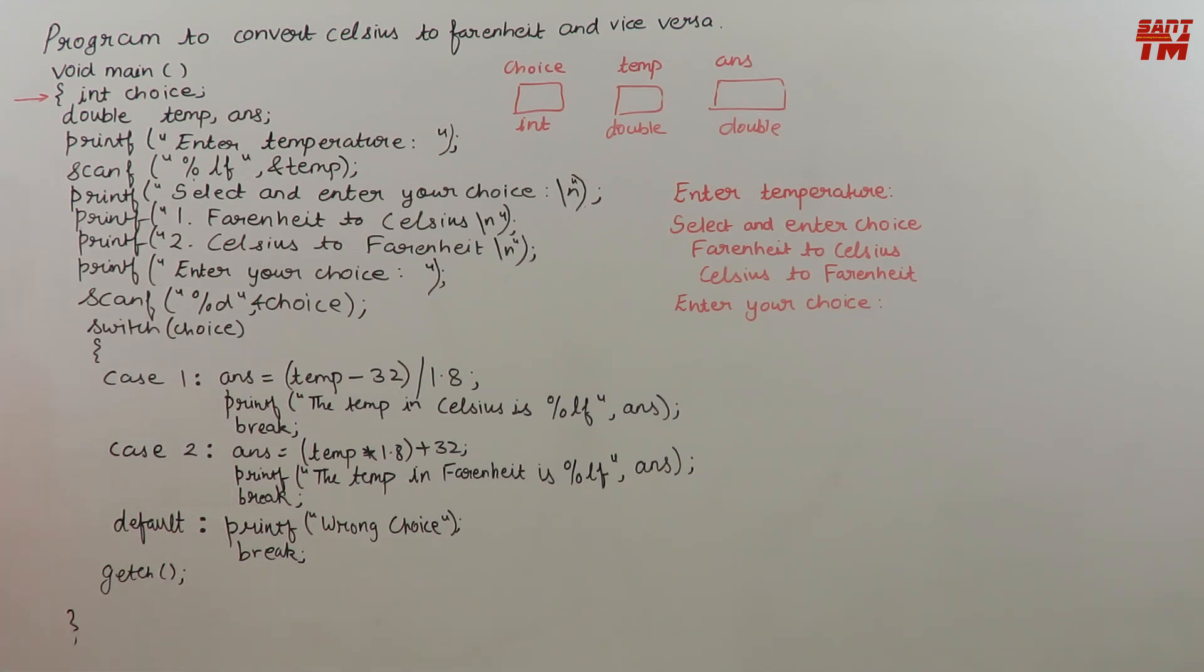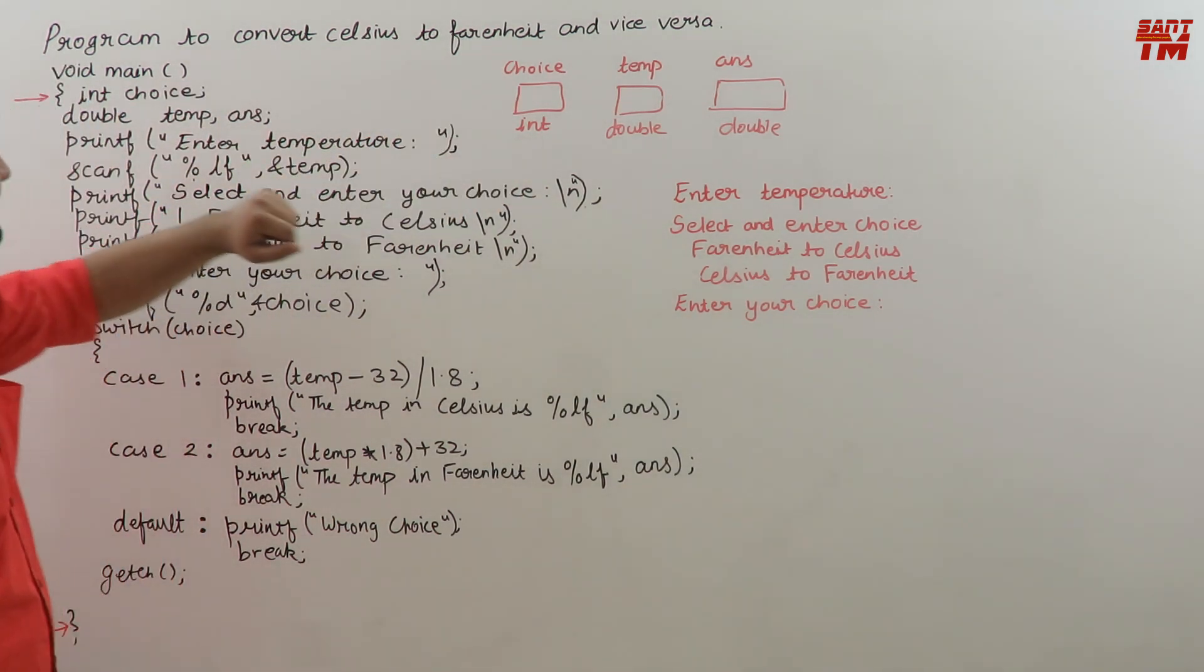You can add the necessary header files, but first let's understand this program, then we'll execute it. The main function starts here and ends here. The first statement is int choice, so a memory for choice will be created for integer type.